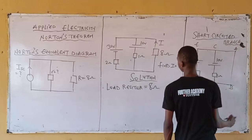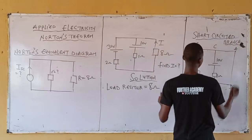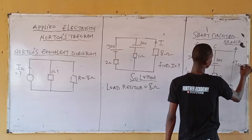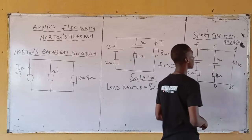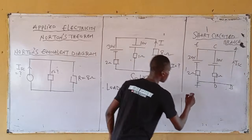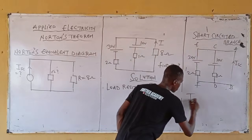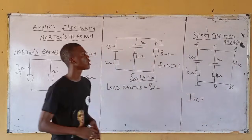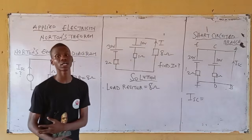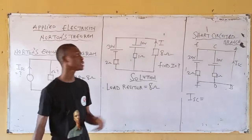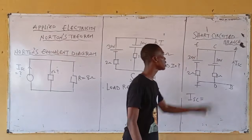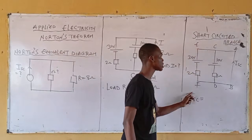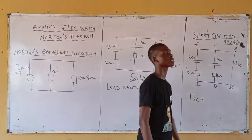Mind you, this branch has your load resistor removed. The current flowing here is I short-circuit. Now calculate I short-circuit. By formula, I short-circuit is the current of the other branches. And in this case, you have just two branches — meaning the summation of the current in this branch and the current in that branch.